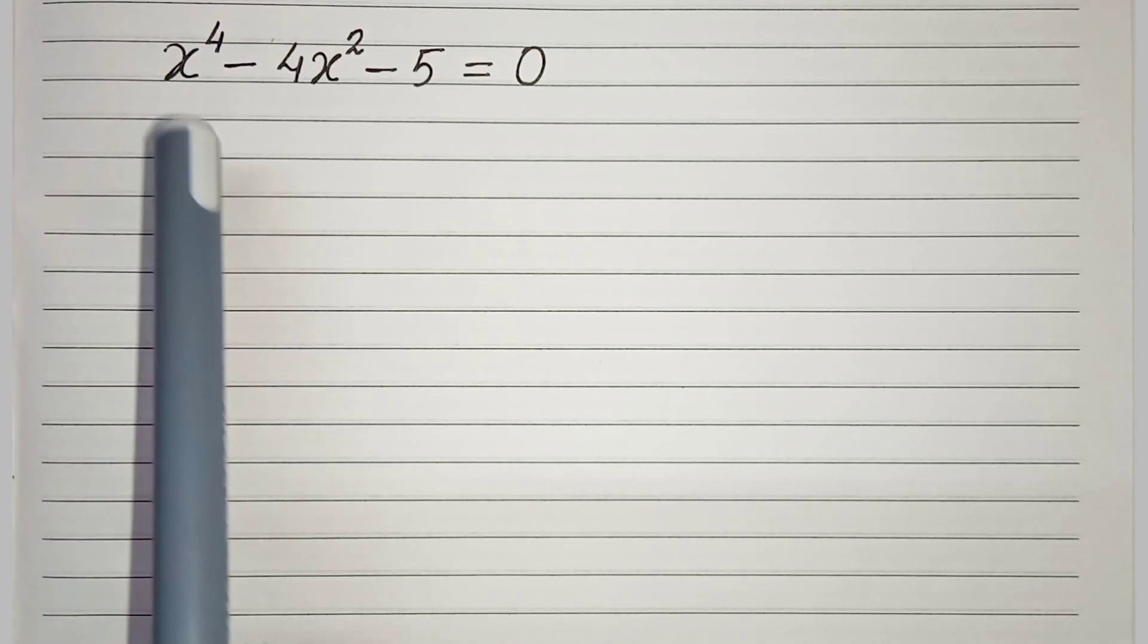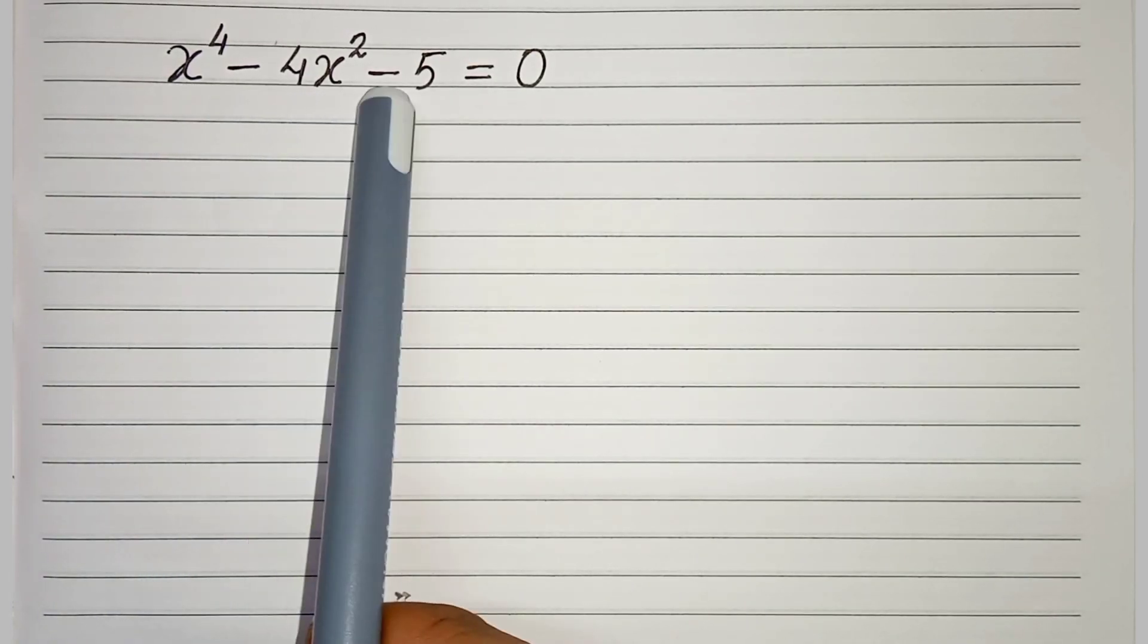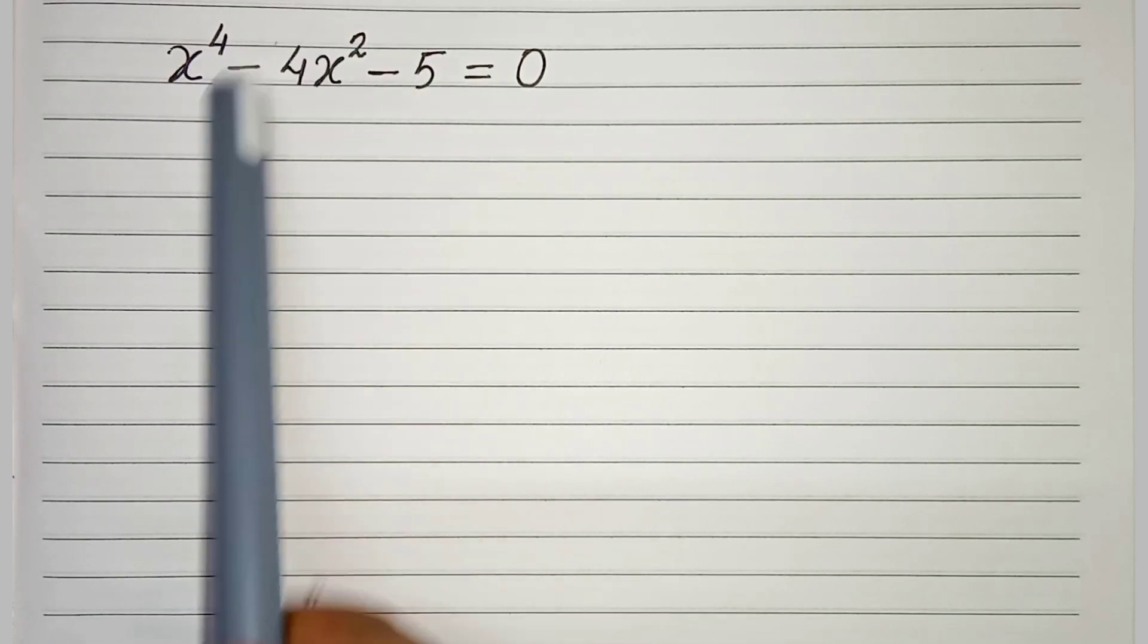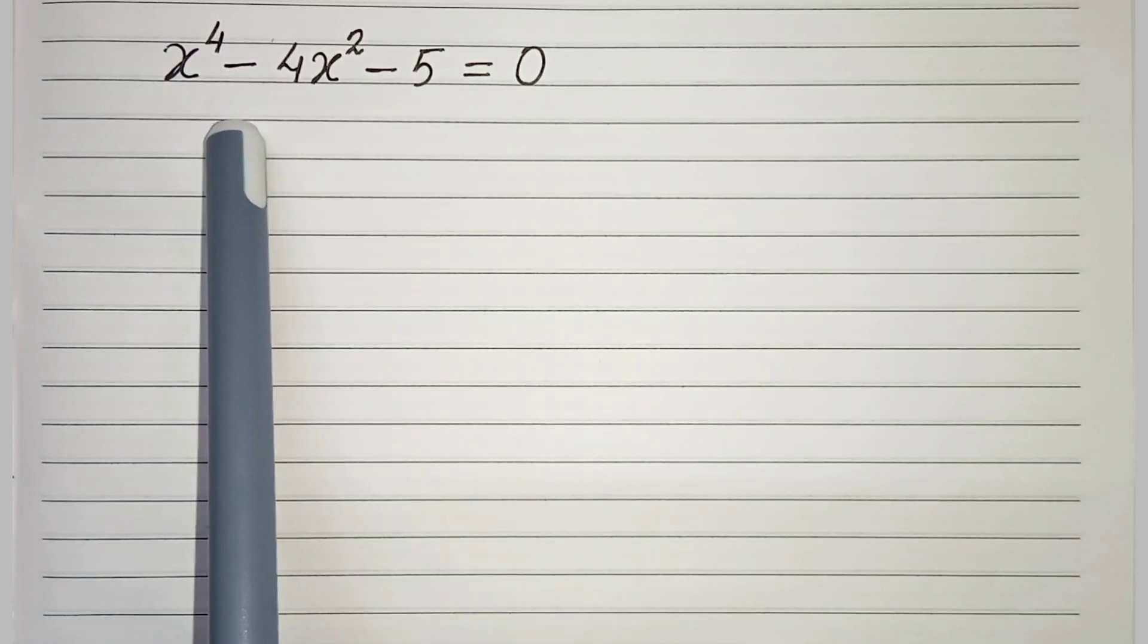Hello everyone, in this video we have x to the power 4 minus 4x square minus 5 equals to 0. We have to solve this and find the value of x. So let's start.